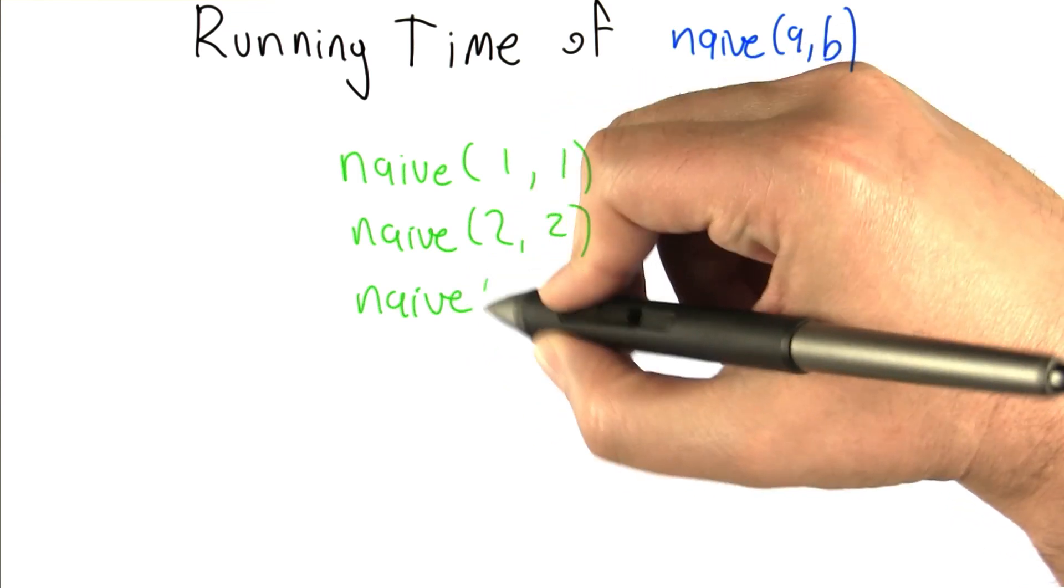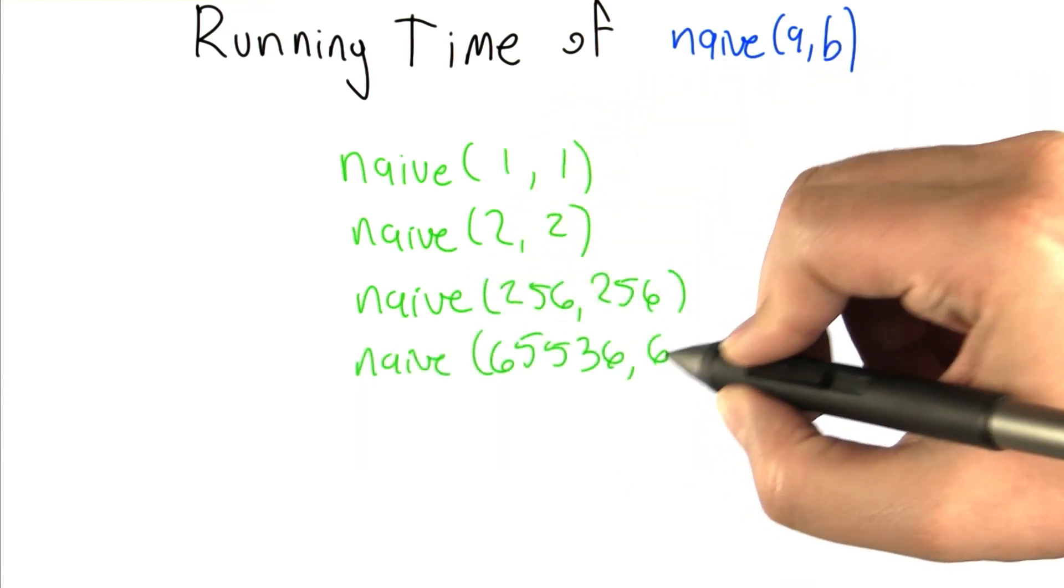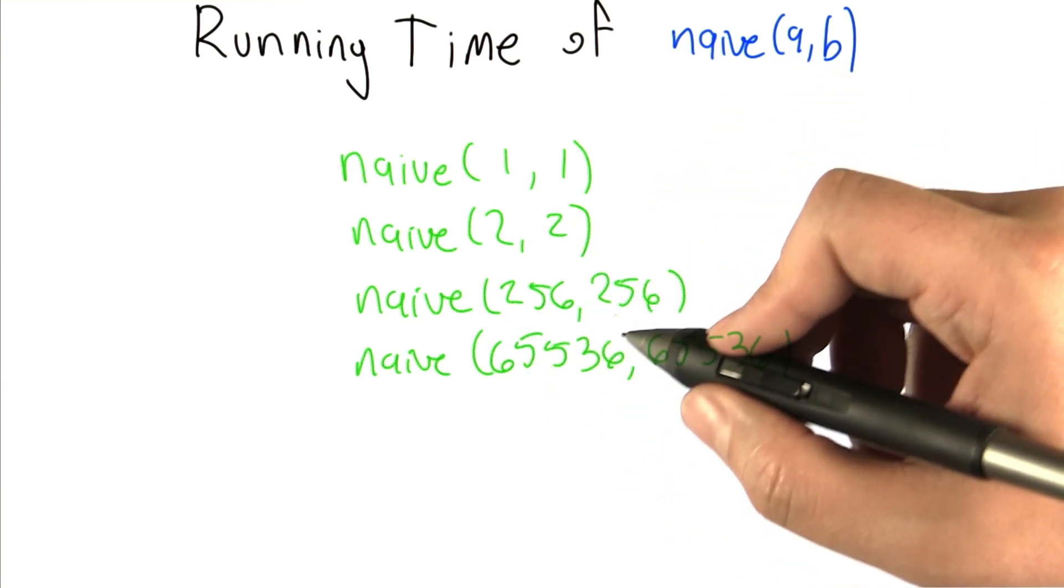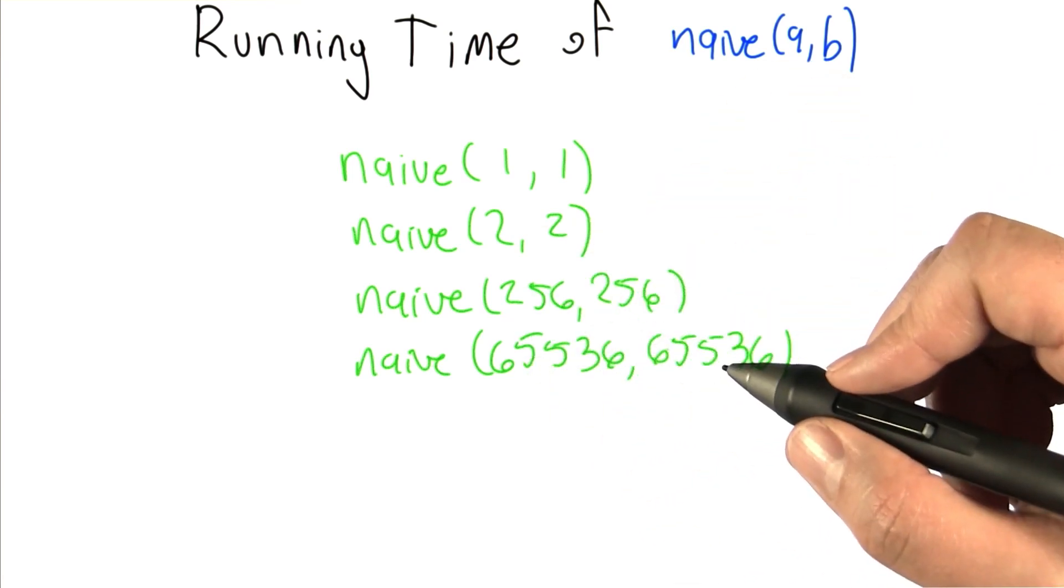So these should be really fast. This should still be pretty fast. As we give it larger and larger powers of 2, you should notice that it's going to take longer and longer for this multiplication to actually execute.